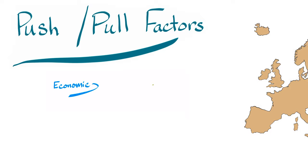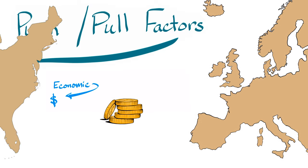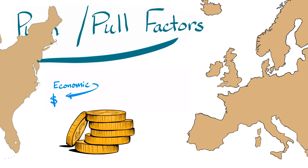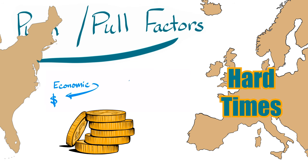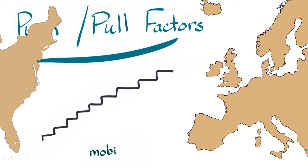Throughout colonial times, Europeans moved to America because of many different push and pull factors. For economic, or money, reasons: a push factor from Europe is that many people were facing hard times. They moved to America for more opportunities — so more options for a better life in America was a pull factor.